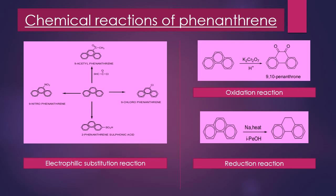On chlorination, phenanthrene gives 9-chlorophenanthrene. On nitration, it yields 9-nitrophenanthrene. On sulfonation, a mixture of 2-phenanthrene sulfonic acid and 3-phenanthrene sulfonic acid is obtained. Substitution occurs at the 2nd and 3rd positions because sulfonic acid groups are bulky, causing steric hindrance similar to anthracene, so instead of the 9-substituted product, the 2- and 3-substituted products are obtained.